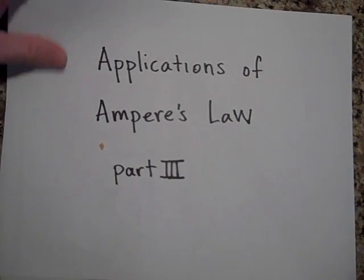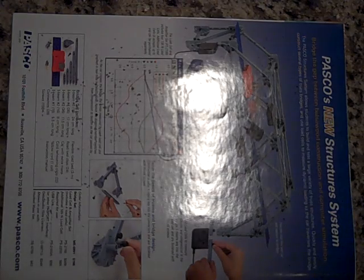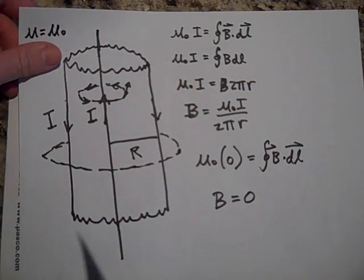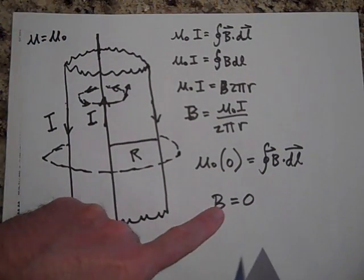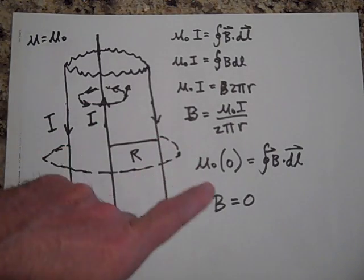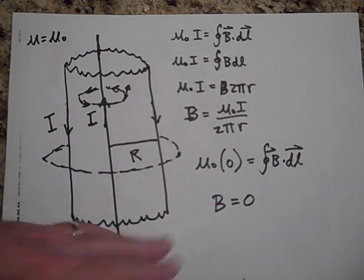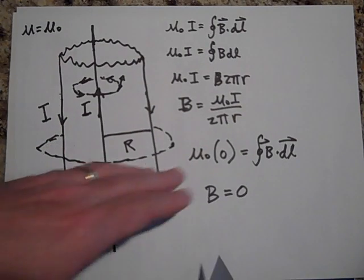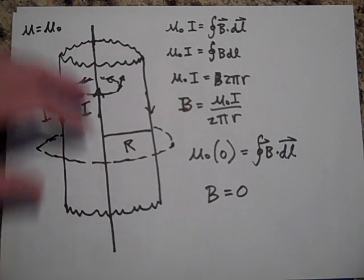Okay, this is part three of applications to Ampere's law. I just wanted to say about that last one, we were talking about the magnetic field outside of a coaxial cylinder being equal to zero, and so that's nice that you don't have to worry about the magnetic field maybe interfering with other parts of other circuits.